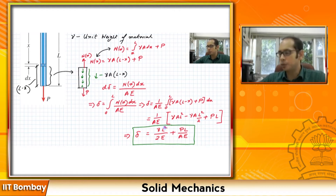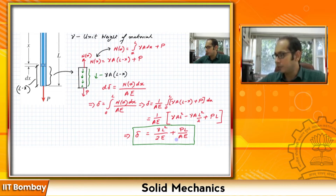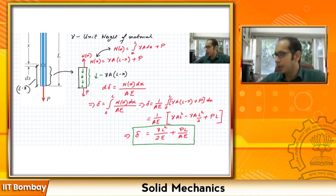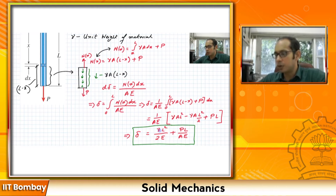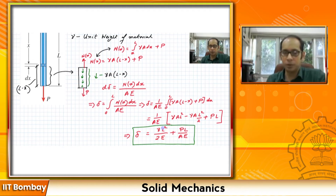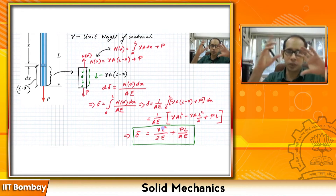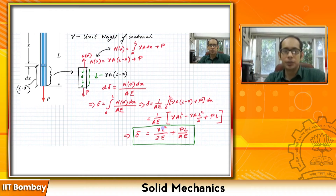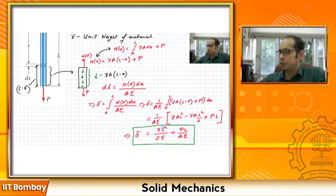An important tip: once you have the final answer, always check the units. This quantity should be in units of length — mm or inch. Check that gamma·L²/E also gives units of length, ensuring you are comparing like with like. These are some of the finer checks you can do. So I hope this problem was clear — we had a bar hanging under self-weight plus load P, took a small section, found the internal force, and calculated the overall deformation delta.